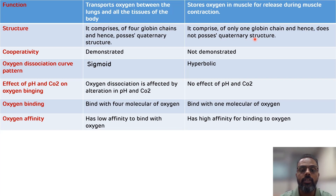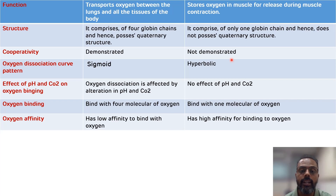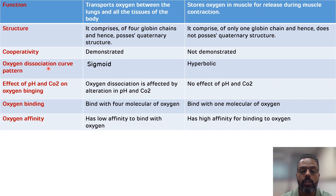Another difference is related to cooperativity. Hemoglobin will demonstrate cooperativity while myoglobin will not demonstrate cooperativity. Another difference is related to the oxygen dissociation curve pattern: hemoglobin will show a sigmoid shape while myoglobin will show a hyperbolic shape in the oxygen dissociation curve.